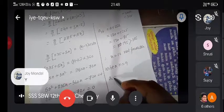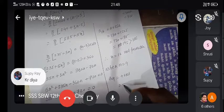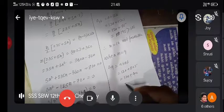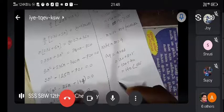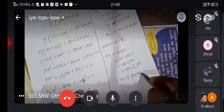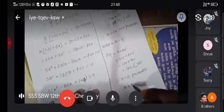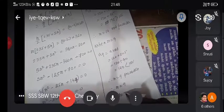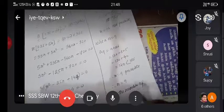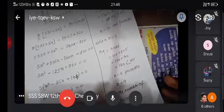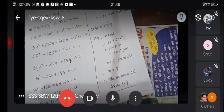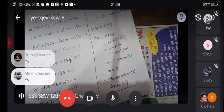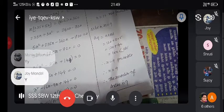When n equals 9, a9 equals a plus 8d, which is 8 into 5, that's 120 plus 40, which is 160, less than 180. Therefore the number of sides is 9. Is it clear?